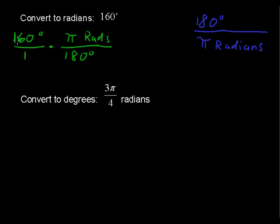2 goes into 160, or I'll say 20 goes into 160 8 times, and 20 goes into 180 9 times. So we have 8 over 9.